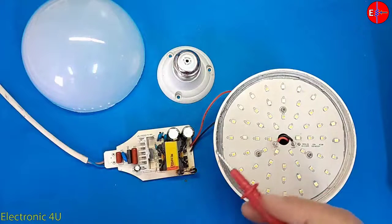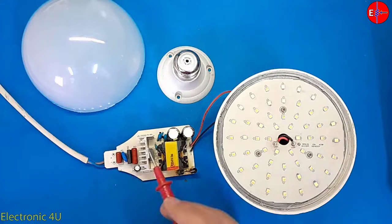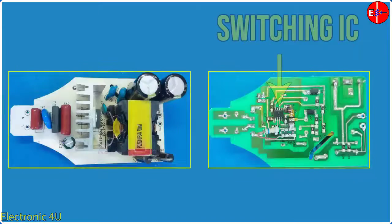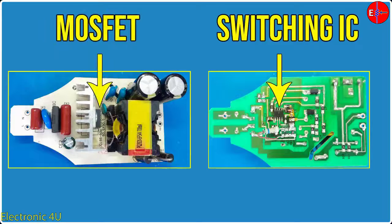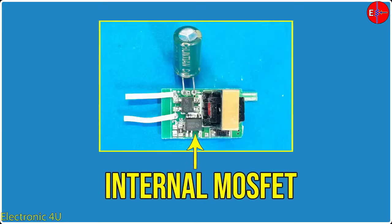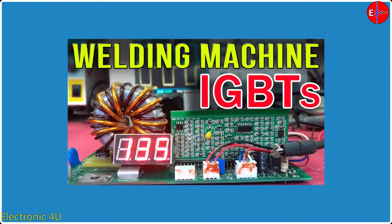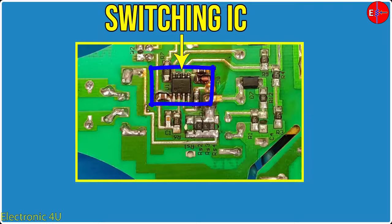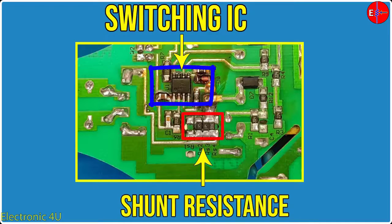What should we do for overvoltage? Most of the circuit of such lamps is a switching type. A switching IC and a MOSFET are used for switching. But in some circuits, there is no MOSFET and the IC contains an internal MOSFET, which I showed an example of in the previous video. What is important here is the current measurement by the IC, which is done with the help of the shunt resistance.